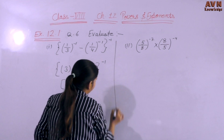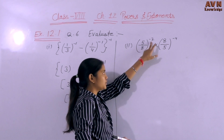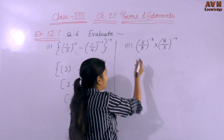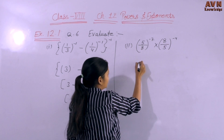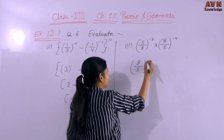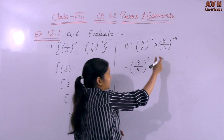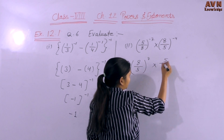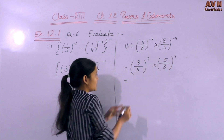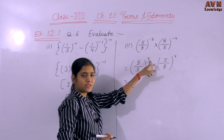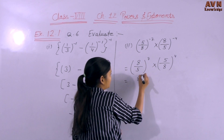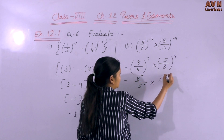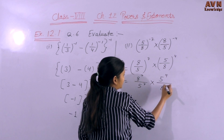Next part: (5/8) raised to the power minus 7, multiplied by (8/5) raised to the power minus 4. Since the power is negative, we take the reciprocal: (5/8)^(minus 7) becomes (8/5)^7. The next term (8/5)^(minus 4) becomes (5/8)^4. So we now have (8/5)^7 multiplied by (5/8)^4.